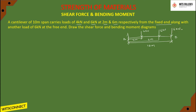So this is the load diagram. For this we have to find out the shear force and bending moment, and then draw the shear force and bending moment diagrams. For the solution, shear force at B — this is point B, point C, and point D. Shear force at B is a downward force, so it is positive.